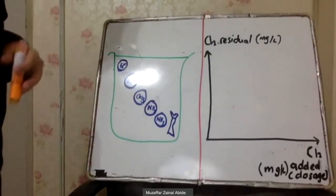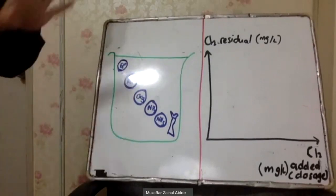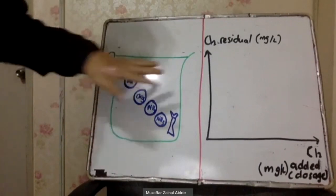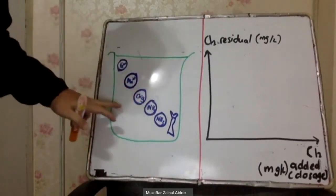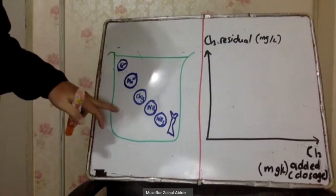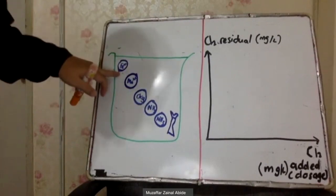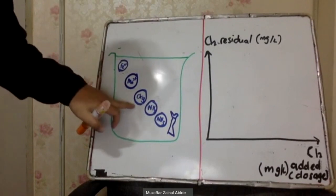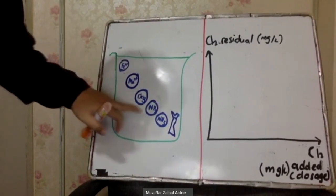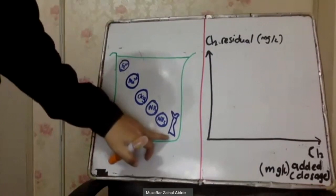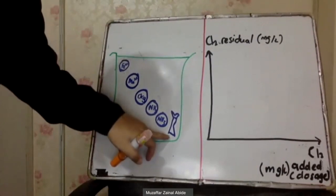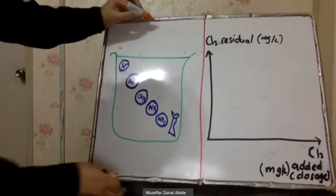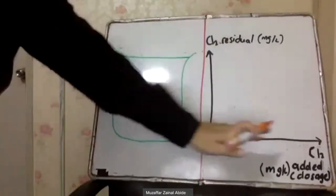Okay, I would like to explain what happens when you add chlorine into water. This is a beaker containing treated water. It still contains a little bit of iron, a little bit of manganese, a little bit of organic compounds, ammonia, and perhaps some bacteria.